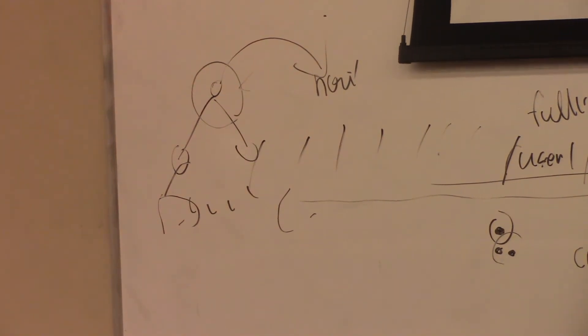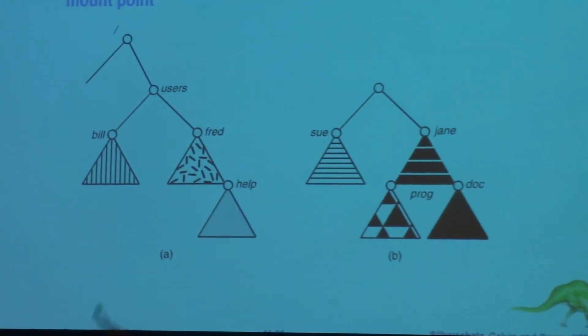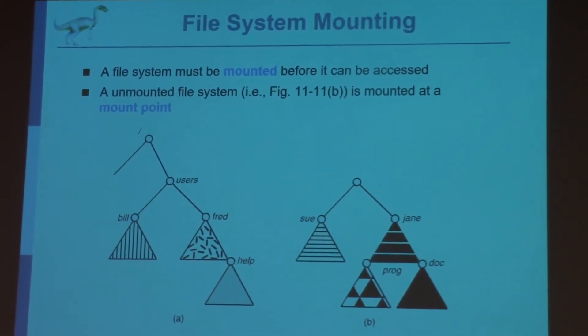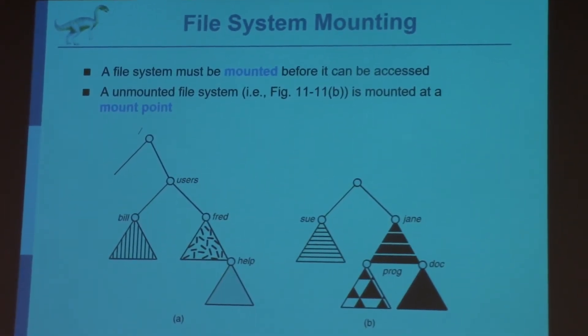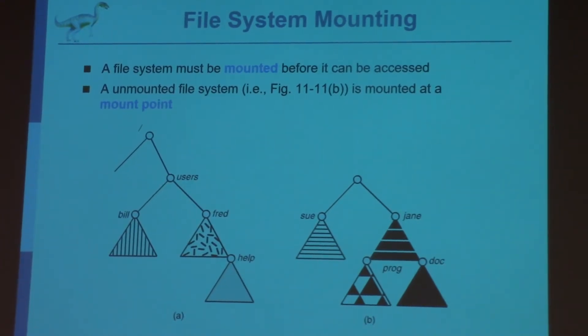If you want to connect this directory structure of the USB file system to a point under /user, then /users is called the mounting pointer. Because of this, one operating system can use many different file systems by mounting.